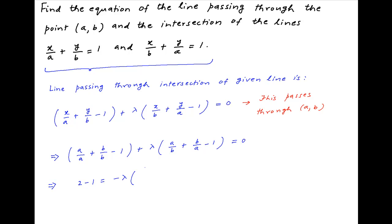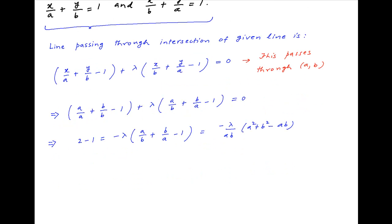minus lambda times a upon b plus b upon a minus 1, which equals minus lambda upon ab multiplied by a squared plus b squared minus ab. Therefore lambda is equal to minus ab upon a squared plus b squared minus ab.